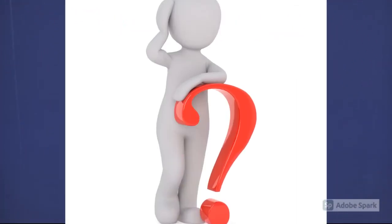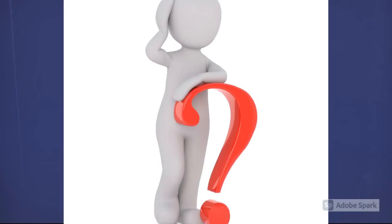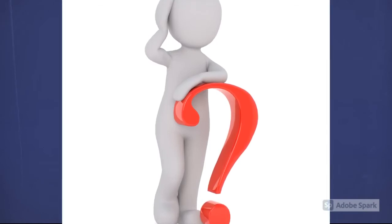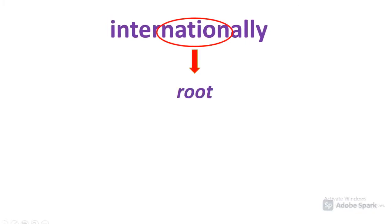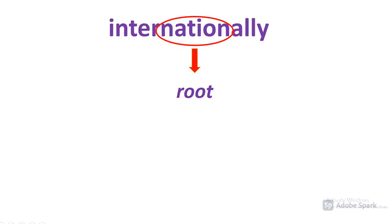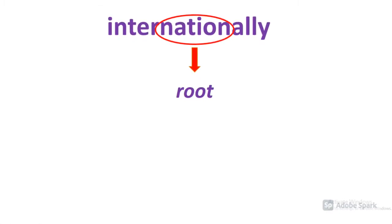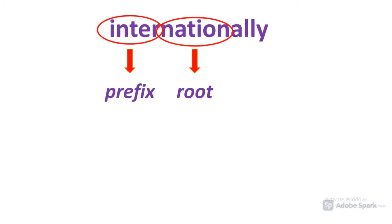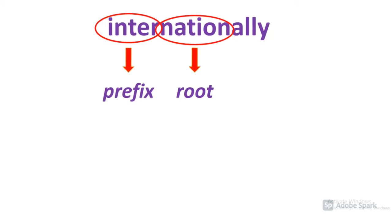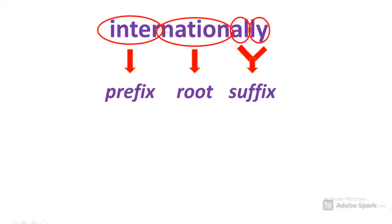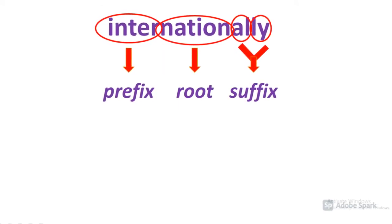So why does English have these forms — nation, national, international, and internationally? Let's start with the word internationally. Native English speakers may recall that in grade school we learned about root words. In the instance of internationally, the root would be nation. Next, we can see the form inter before nation, creating what's called a prefix. Each form following a root is called a suffix.